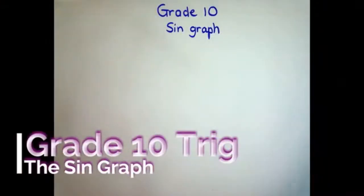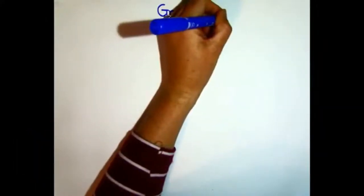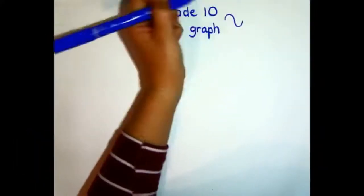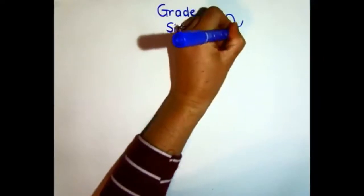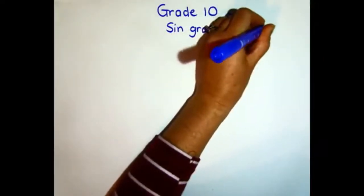The sine graph is easiest to draw if we can remember the general shape. It's what I call a roller coaster, and that's a way to help remember the shape it's supposed to look like.